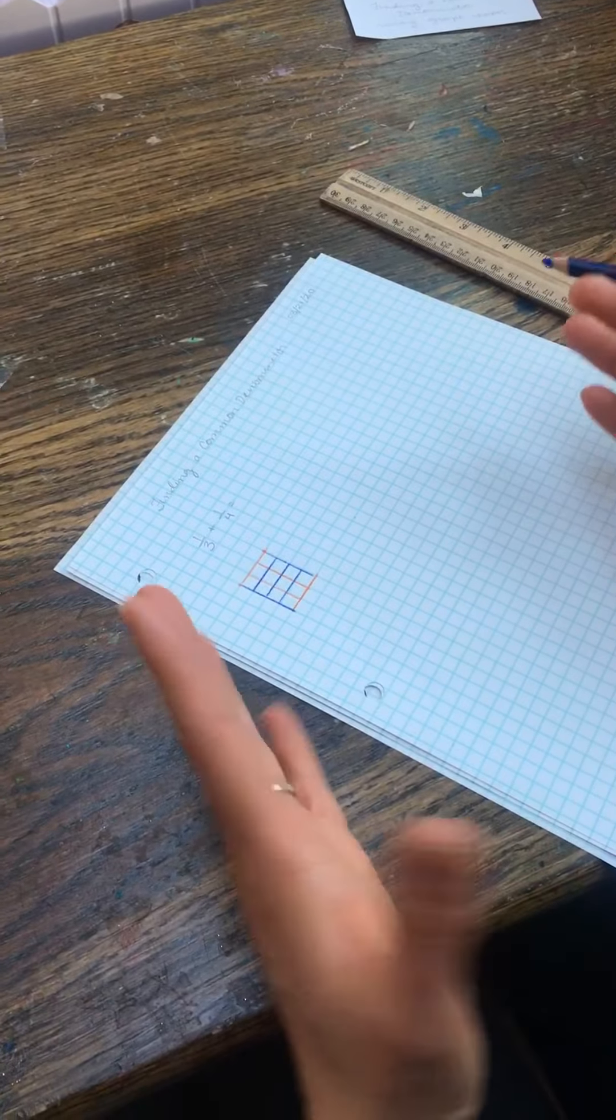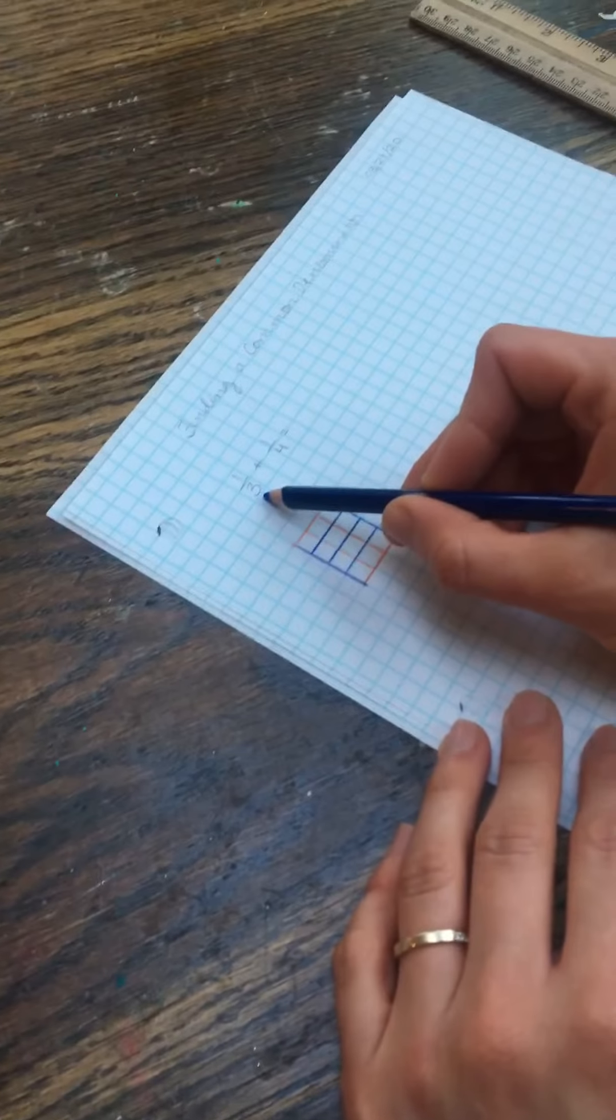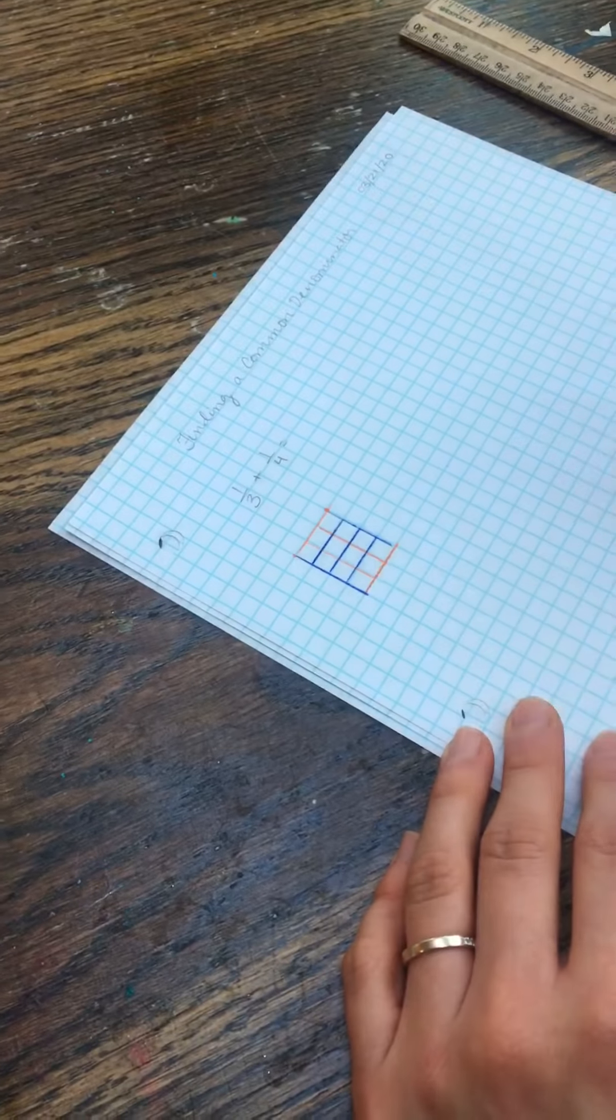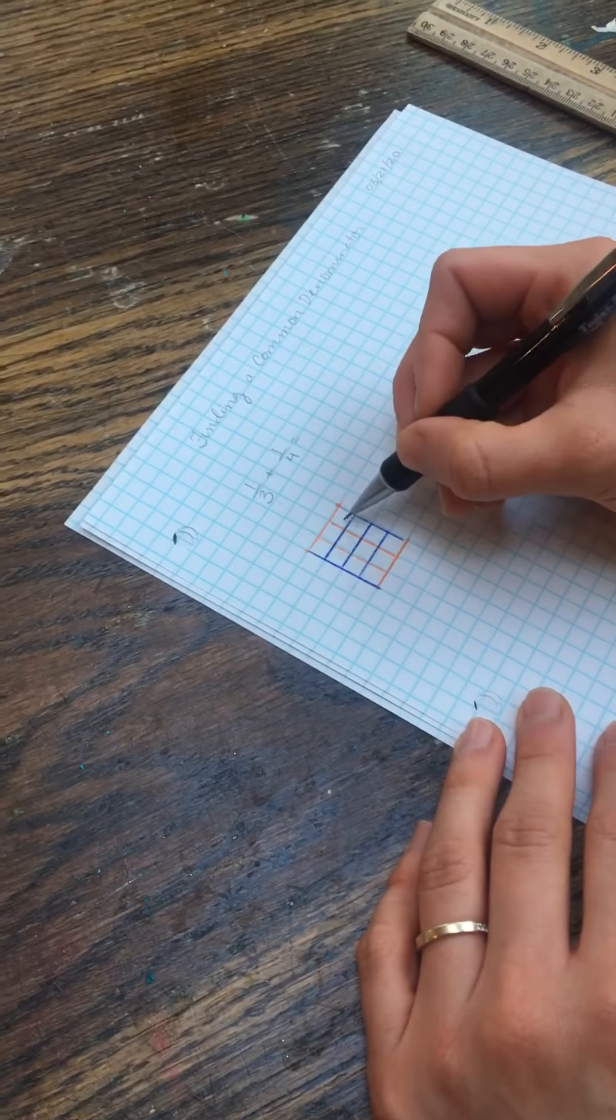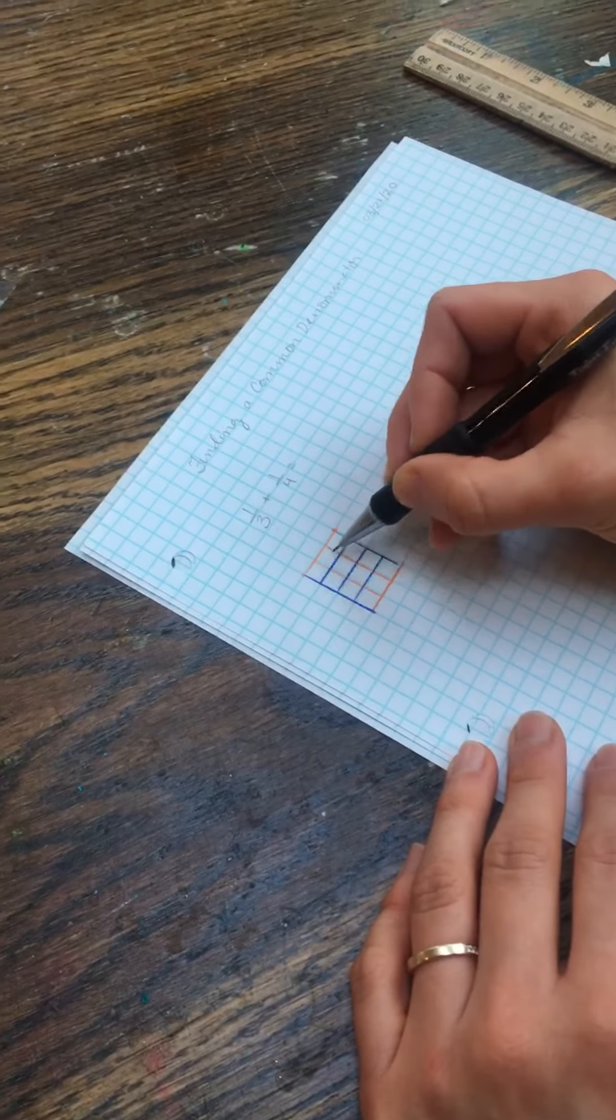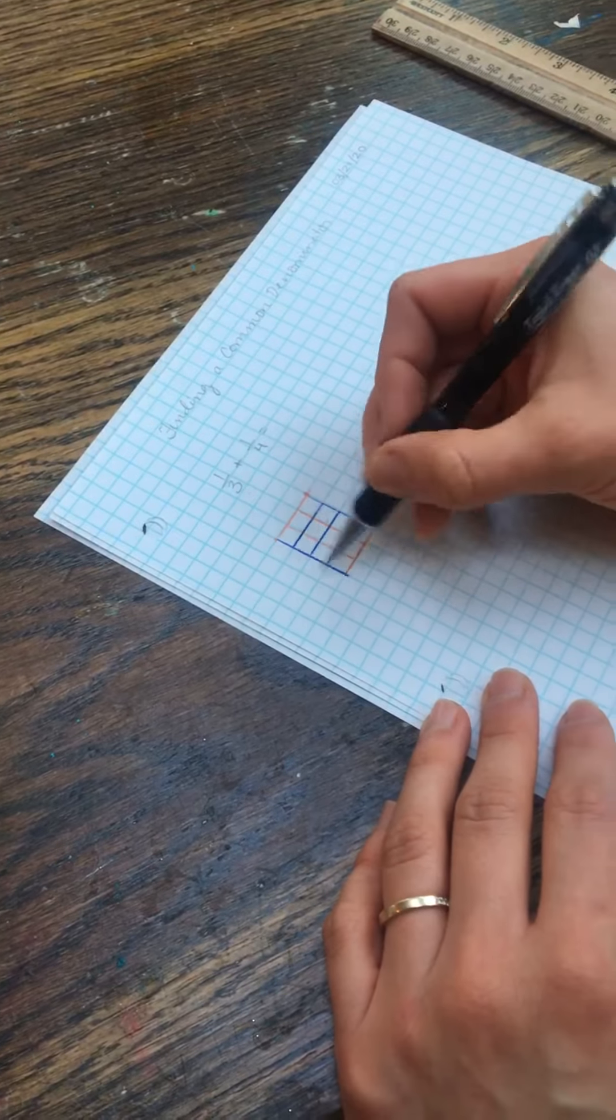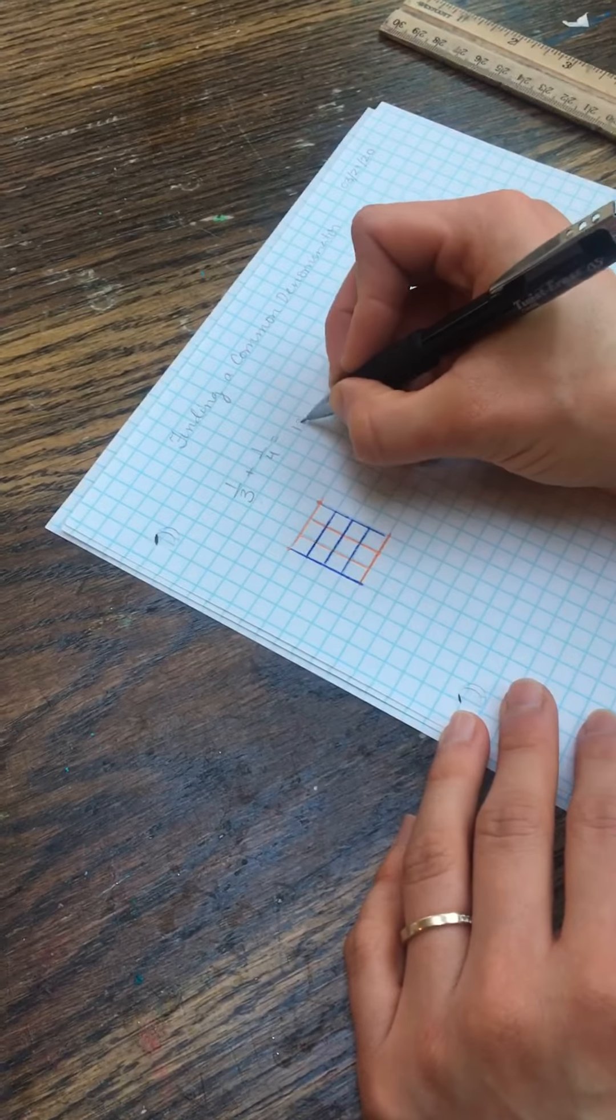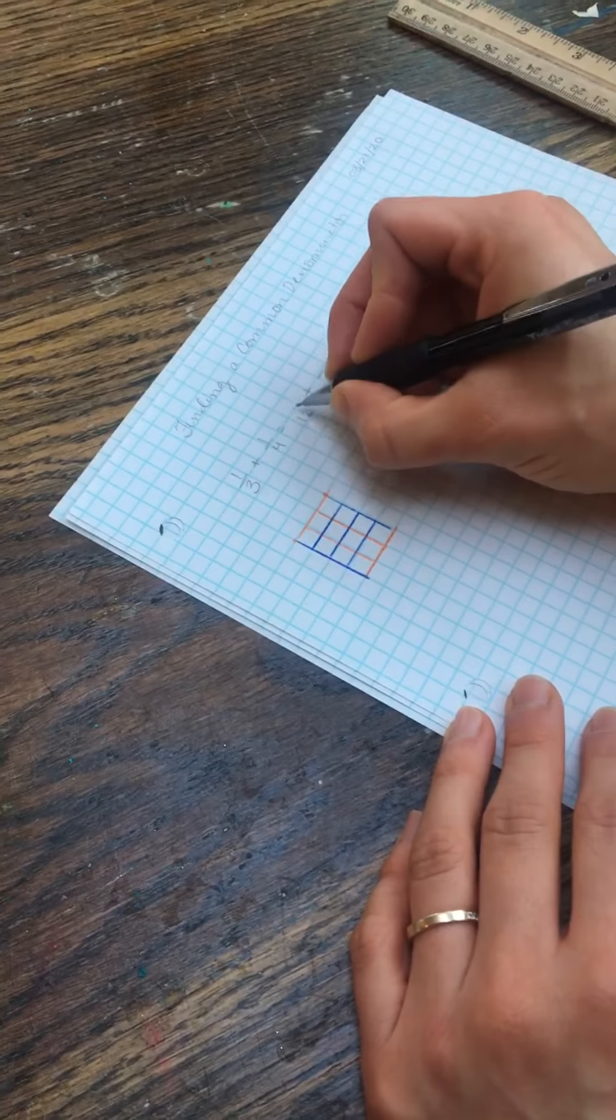Okay, so now I'm ready to add them together. I need to find out what equivalent fraction the thirds is that's shared with the fourths. So my new unit is divided into one, two, three, four, five, six, seven, eight, nine, ten, eleven, twelve. My new unit is twelfths. So I know both of my fractions can be renamed as twelfths.